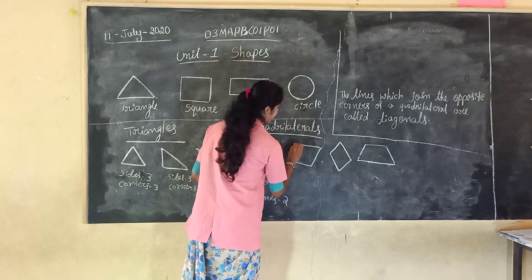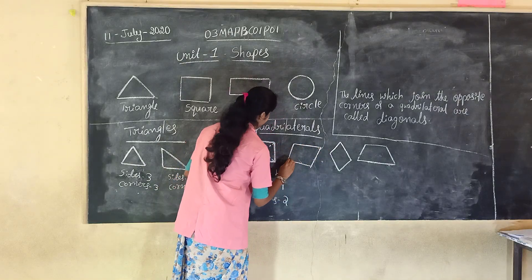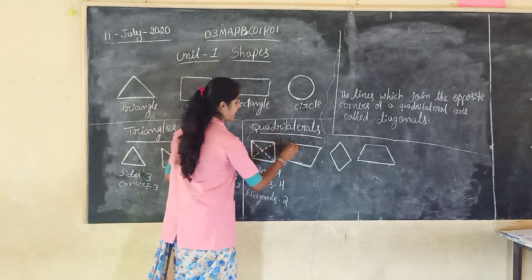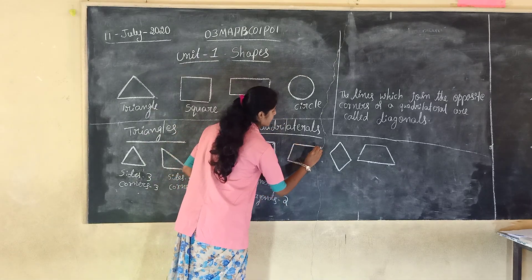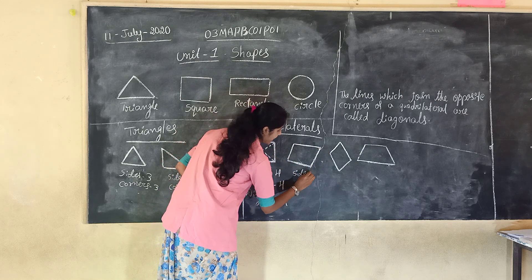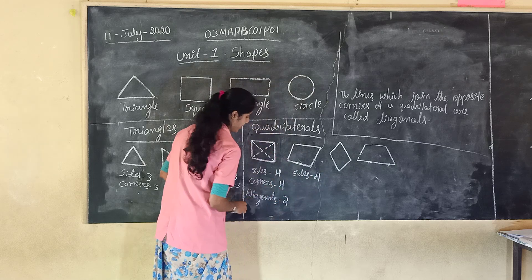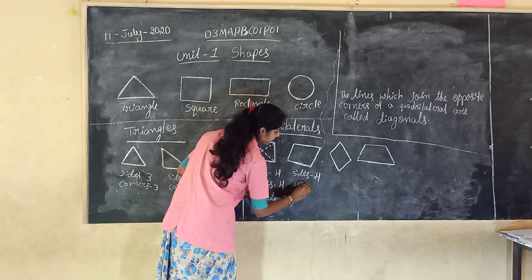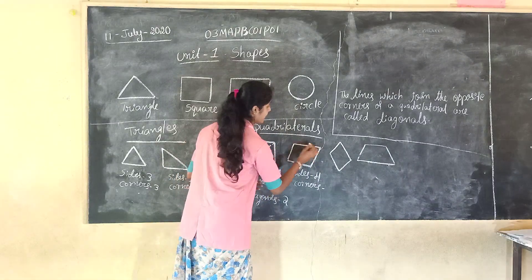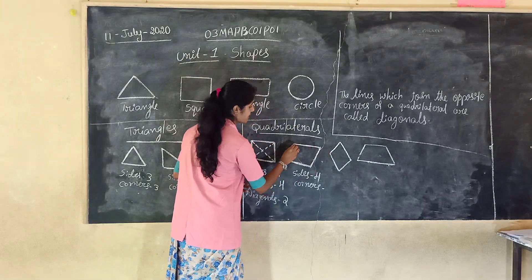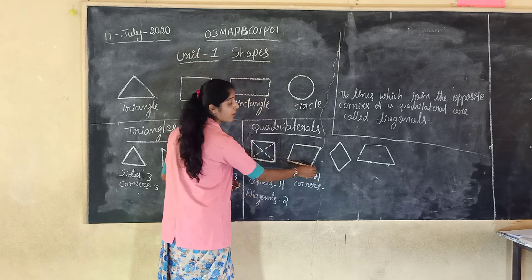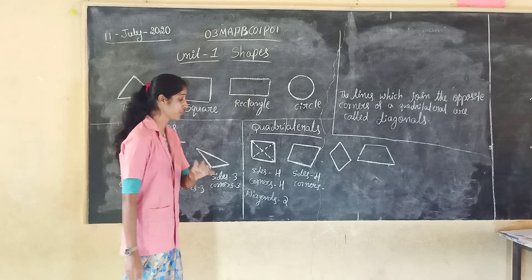Next, here in this quadrilateral, how many sides? Four sides — one, two, three, four. So here also, sides: four. And corners? Corners: four — one, two, three, four. This is the corner. Total: four corners.